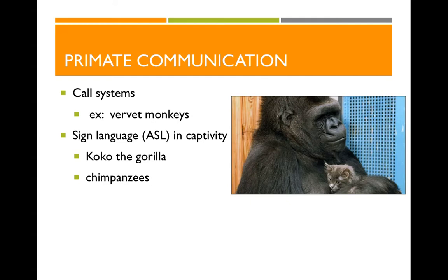We can also glean important information about primate communication by looking at great apes taught to use sign language in captivity. Perhaps the most famous is Coco the gorilla — a female gorilla who, over approximately 40 years, lived alongside humans and learned to use American Sign Language. Coco became very famous in the 1980s, with a whole series of celebrities going to visit and speak with her, making her a celebrity for gorilla conservation and for the capacity of gorillas to communicate in a language humans could understand.